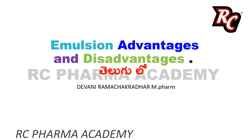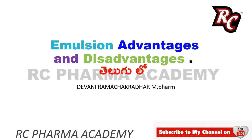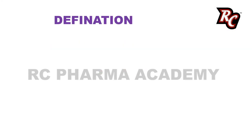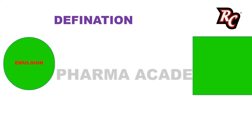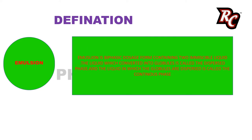First, let's cover the definition. An emulsion contains two immiscible liquids. One liquid is converted into globules — this is called the dispersion phase. The other liquid in which the globules are dispersed is called the continuous phase.